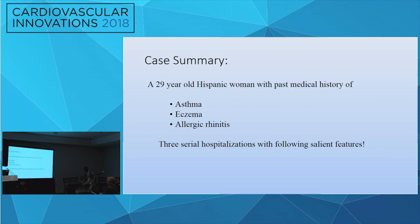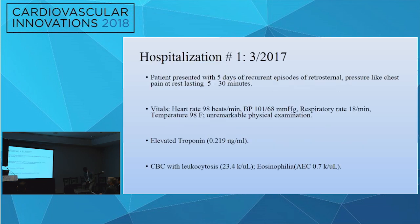I'm presenting a 29-year-old Hispanic female with three serial hospitalizations. The first presentation was in March 2017, where she presents with five days of recurrent anginal chest pain. Vitals were stable. She had elevated troponins when she presented to the ED, and she had leukocytosis with eosinophilia, with an absolute eosinophilic count of 0.7.